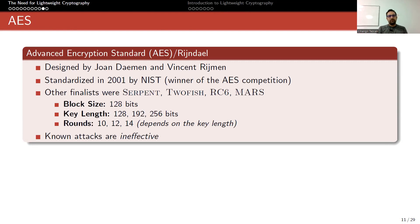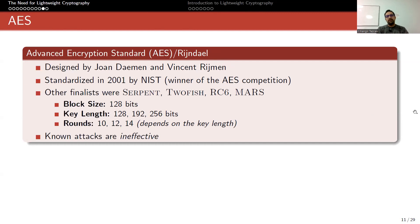Currently the most famous block cipher — responsible for perhaps 99% of encryption on the whole internet — is AES, the Advanced Encryption Standard, originally called Rijndael, designed by Joan Daemen and Vincent Rijmen, two Belgian cryptographers. It won the AES competition and became the NIST standard. Other finalists included Serpent, Twofish, RC6, and MARS. AES has a block size of 128 bits and supports three different key lengths.